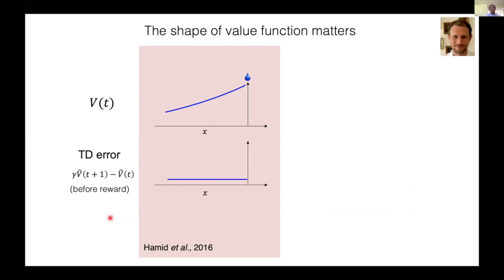Considering the derivative-like property of TD errors, Sam Gershman pointed out that the shape of the value function matters. If the value function is an exponential decay function, computing TD error using this value function results in zero TD error. What if the value function takes a different shape? For example, if the value function is more convex than exponential decay function, computing TD error using this value function results in a positive or even ramping up TD error. Therefore, just by observing a dopamine ramp, it is unclear whether we are looking at a value function or TD error that is the result of the derivative of a sufficiently convex value function.